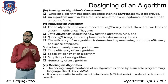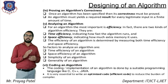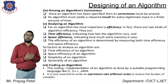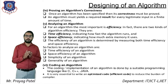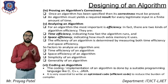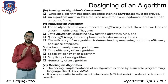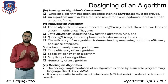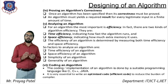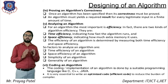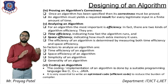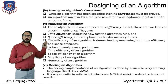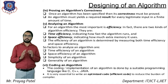Step four is checking the correctness of the algorithm. After designing the algorithm — not a program — you provide n number of inputs to the algorithm and check the result on paper to verify whether the answer is correct according to the given set of inputs.